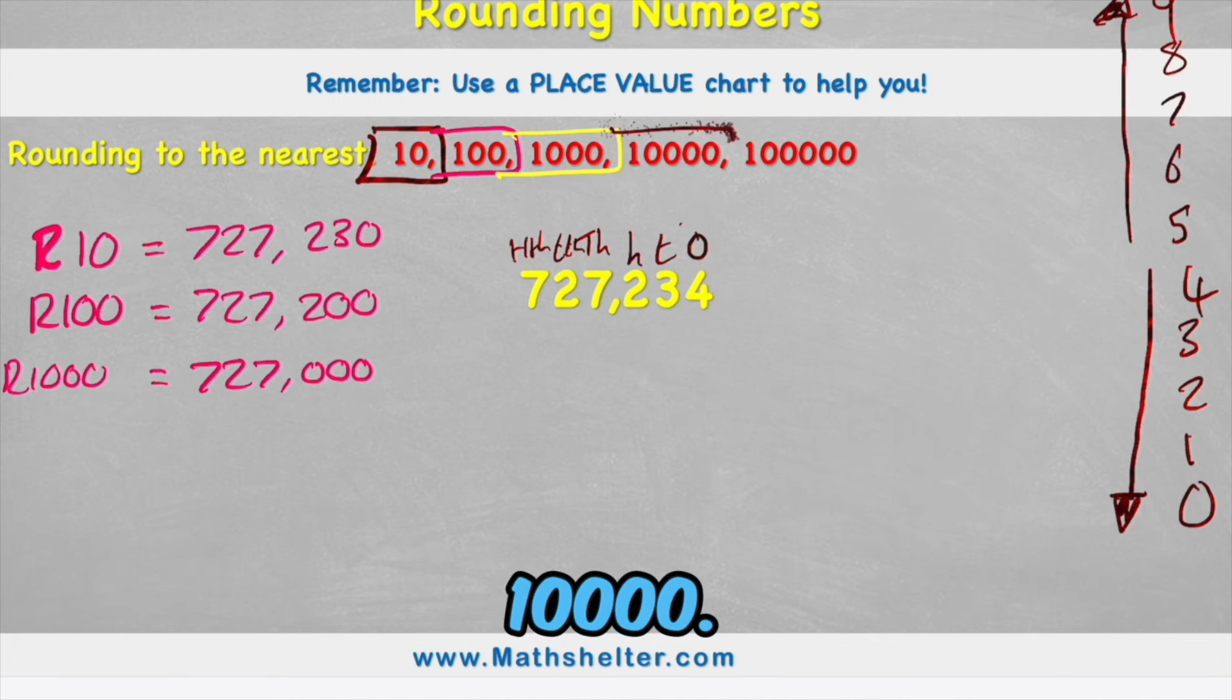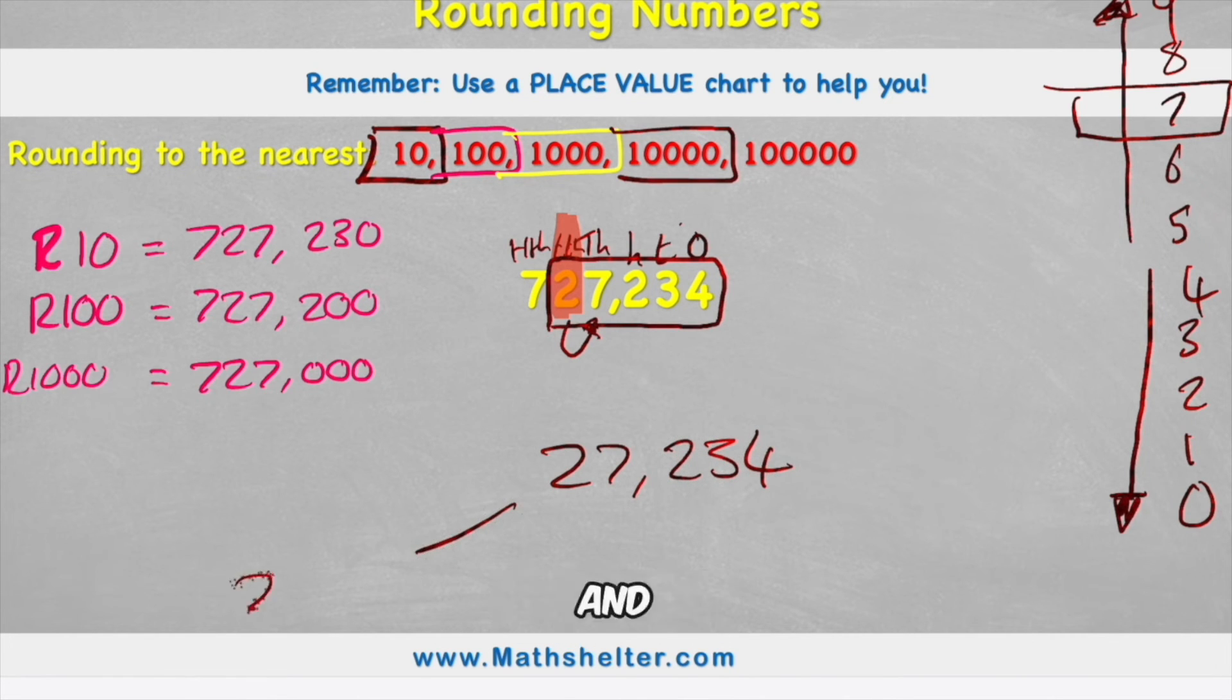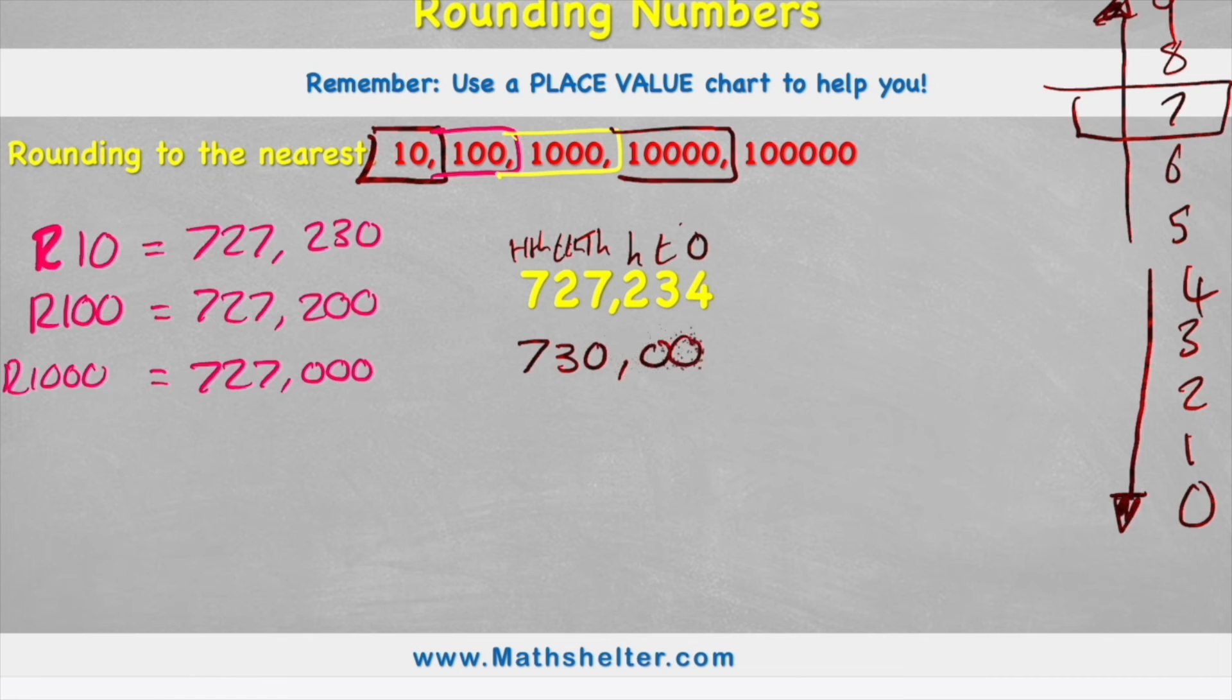Okay let's look at 10,000 and in my 10,000's column I can see I have a 2 and if I look next door this time I have a 7. 7 is in the rounding up category because if we think about it this group here that we're looking at, 27,234, is going to be between 20,000 and 30,000 and we look at the 7 and we realize that must mean it's closer to 30,000. So my answer becomes 730,000. So rounding it to the nearest 10,000 becomes 730,000.